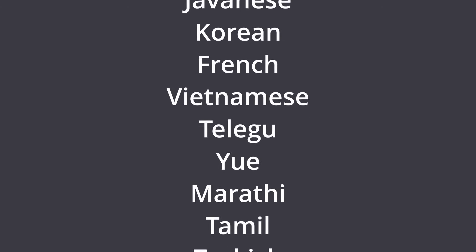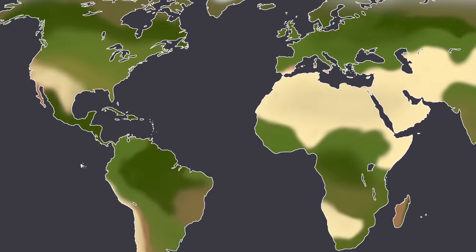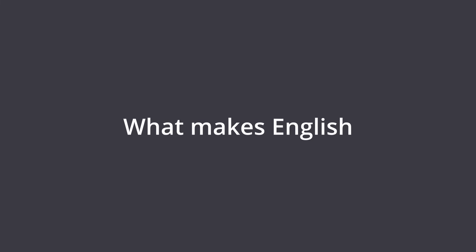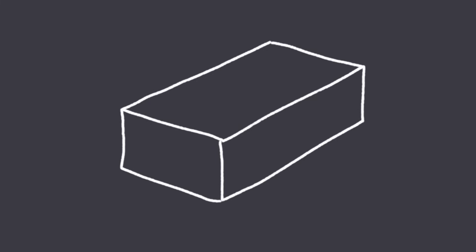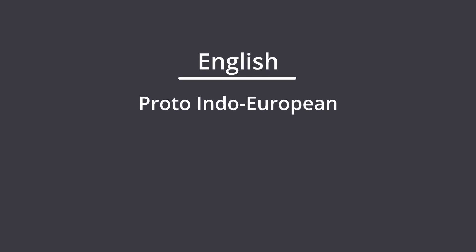There are lots of different languages all over the world, but how do we find out which one is the most different from English? To do this, we need to establish what makes English English. What are some fundamentals that we can compare so we can find the language that is the opposite of English? English has three main qualities that we'll be evaluating in this video. It's a Proto-Indo-European language.